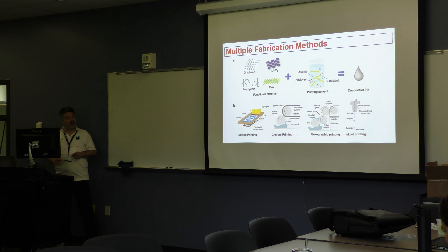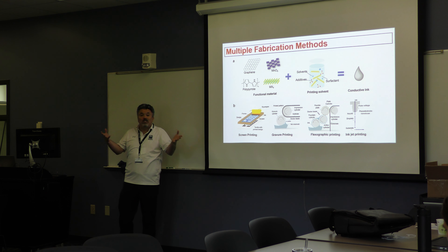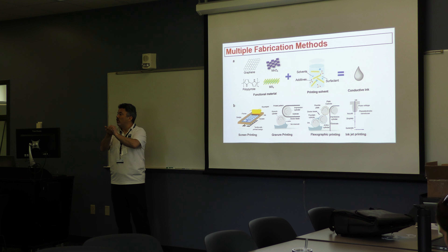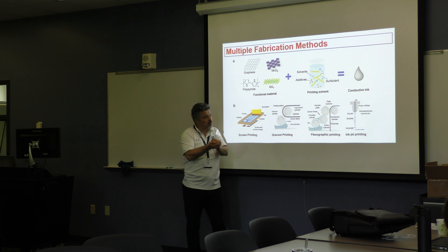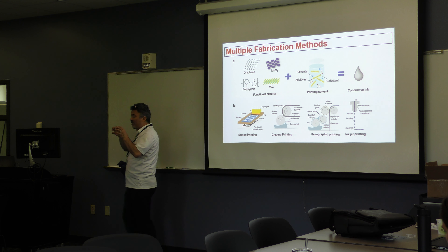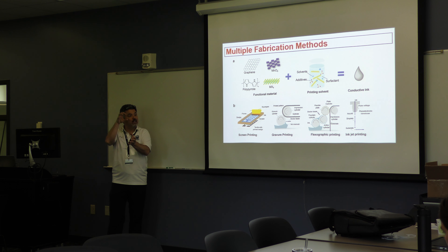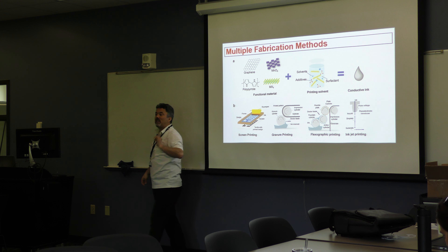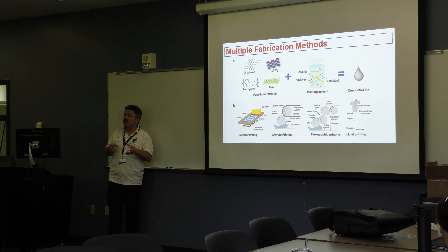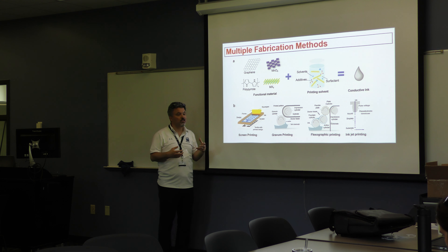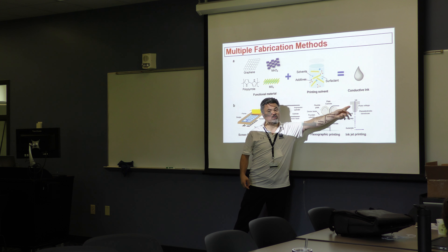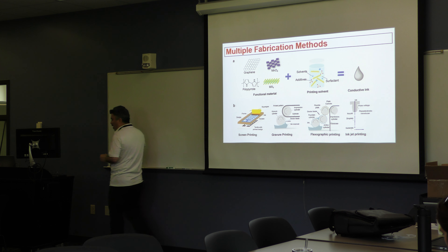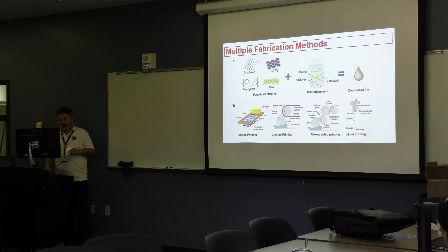In inkjet printing, you have a micro reservoir containing ink with a small orifice tip, and you push the ink out in micro-droplets. Droplet volume is typically picoliters to nanoliters — consumer printers use more like nanoliters. To push the ink from the chamber, you typically use thermal or piezoelectric actuation.